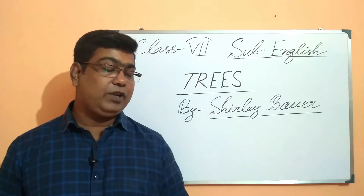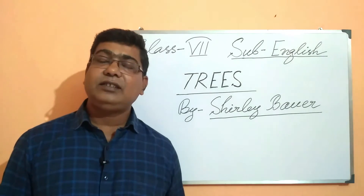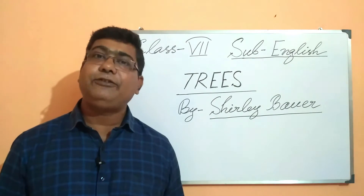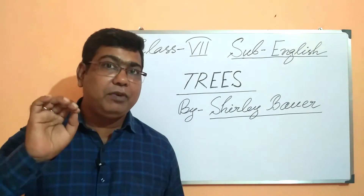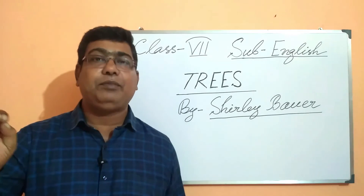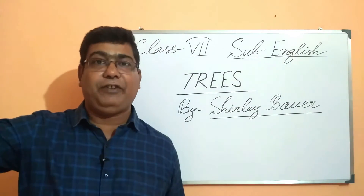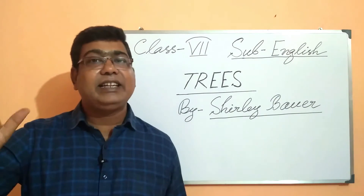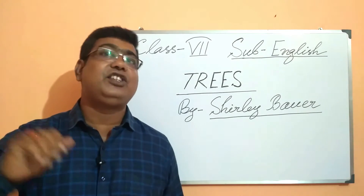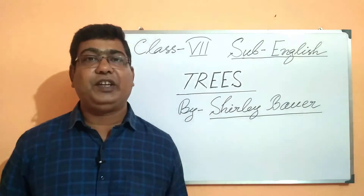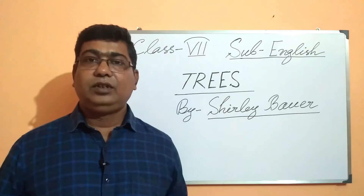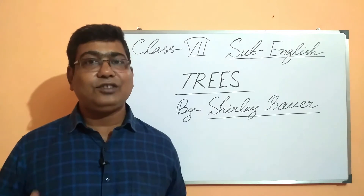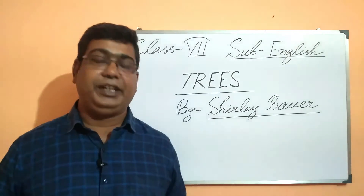Trees are for kites to get caught in. We have all seen kite flying — when the cord of a particular kite is snapped, the kite flows away and sometimes gets caught in the branches of a tree. This is how a kite is caught in the branches of a tree.